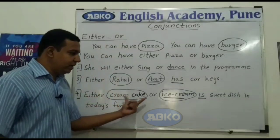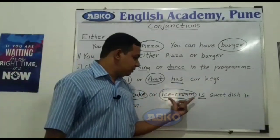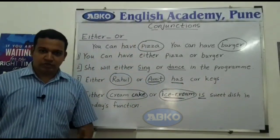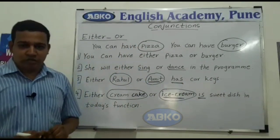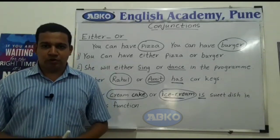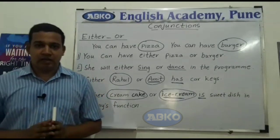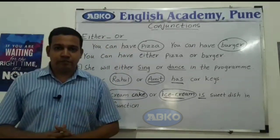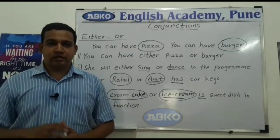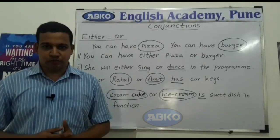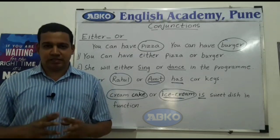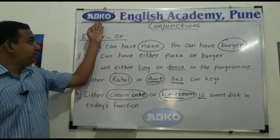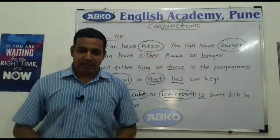So, either cream cake or ice cream is sweet dish in today's function. This is the either...or conjunction. Well guys, I hope you have now understood clearly how to use the conjunction either...or. We will stop here today. In the next video, we will bring a few more conjunctions for you. If you have not subscribed to our channel, please subscribe. Our YouTube channel name is APCO English Academy. Thank you very much.